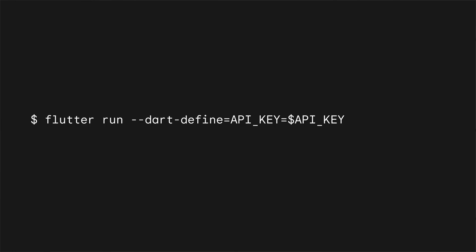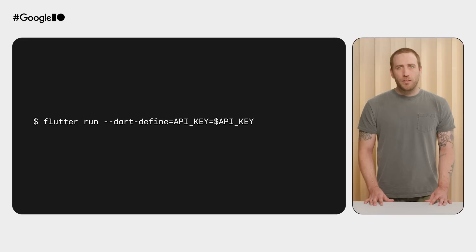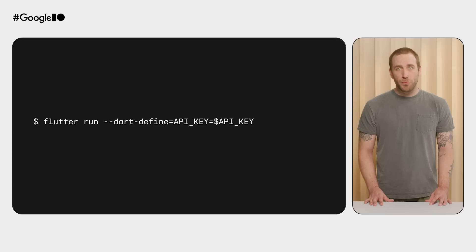The simplest way to pass in the API key as an argument is to use the Dart define flag when you run the Flutter run command, and this works great for development. Now that the Gemini API is set up and the app is running, we can focus on adding the logic to the app that will make the request to the Gemini API with the prompt.